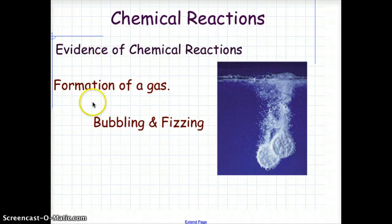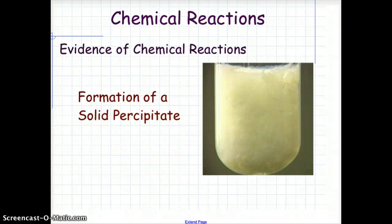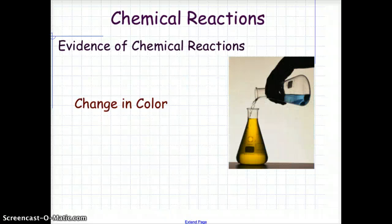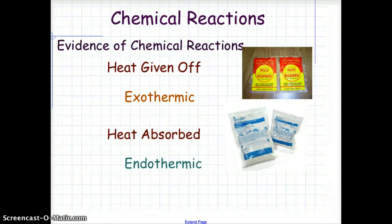To remind ourselves, a chemical reaction takes place, and evidence of chemical reactions could be formation of a gas, like bubbling and fizzing. Evidence of a chemical reaction could also include the formation of a solid precipitate, the disappearance of a solid dissolving, color changes, or heat being given off or absorbed — exothermic and endothermic reactions.